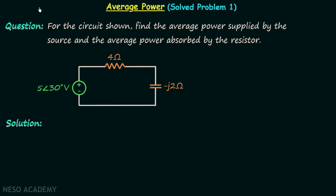In the previous lecture we had a discussion on average power in AC circuits, and now we are going to solve one problem based on the same topic. According to the problem we are required to find out the average power supplied by the source and the average power absorbed by the resistor in this electrical circuit.